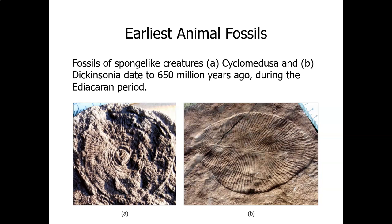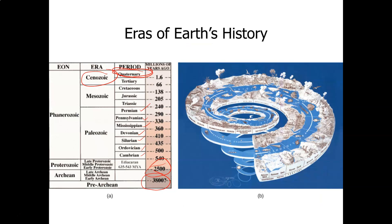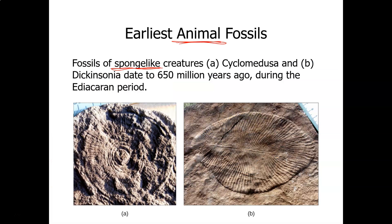The earliest animal fossils were of sponge-like creatures. A is a picture of a Cyclomedusa, and B is a Dickinsonia fossil. They date 650,000,000 years ago during the Ediacaran Period. The Ediacaran Period was in the Proterozoic Eon, which basically had early, middle, and late Proterozoic eras. So those are the earliest animal fossils.